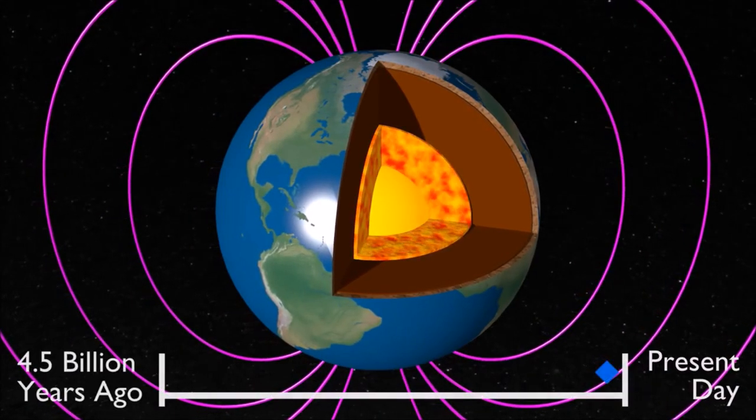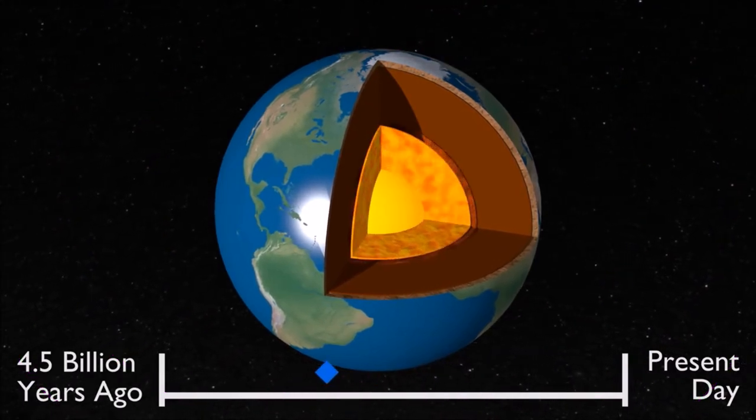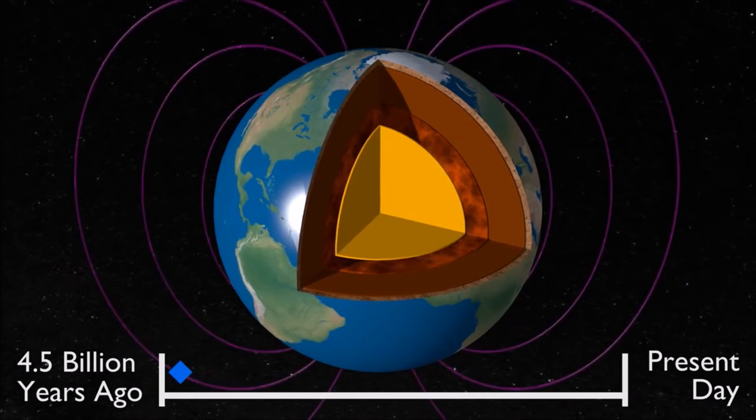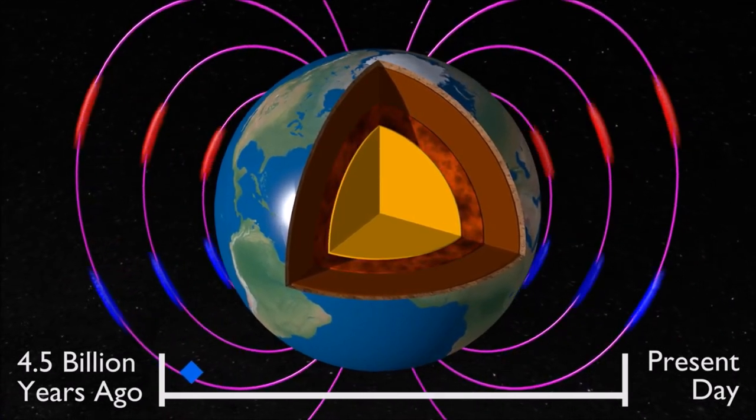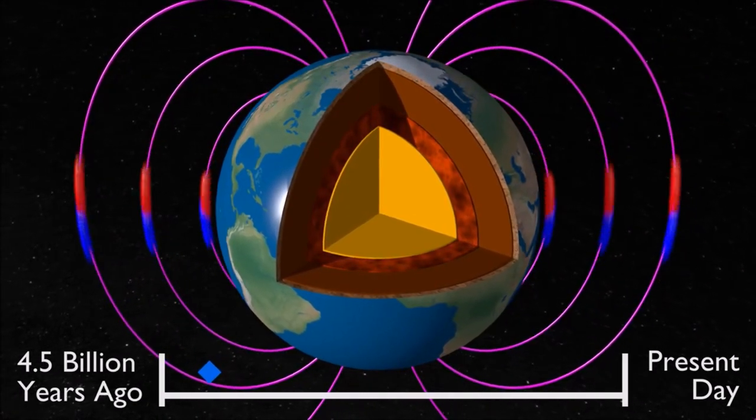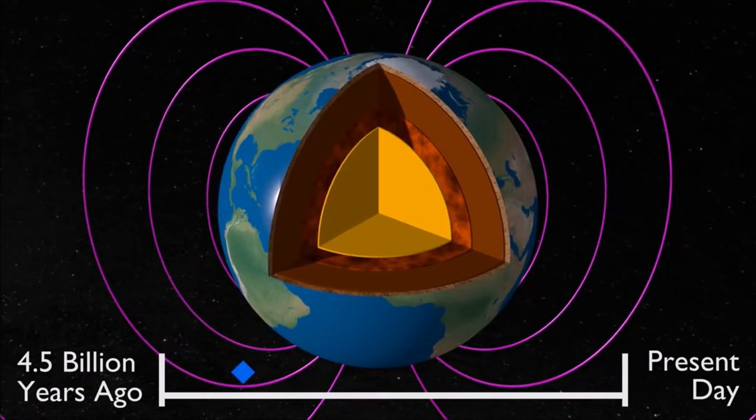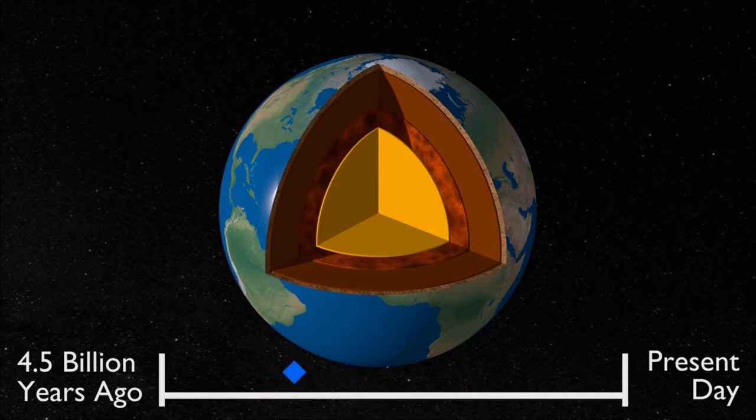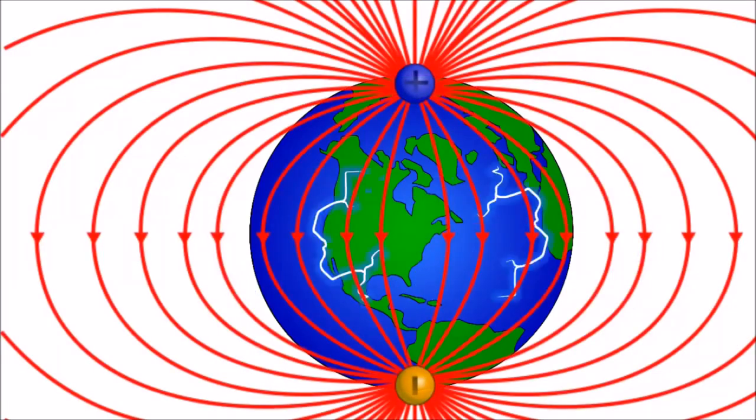However, it is believed that the Earth's magnetic field is due to the molten charged metallic fluid inside the Earth's surface with a core of radius of about 3500 km compared to the Earth's radius of 6400 km.